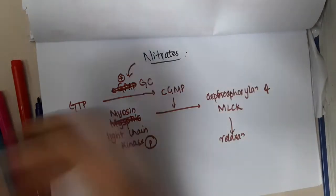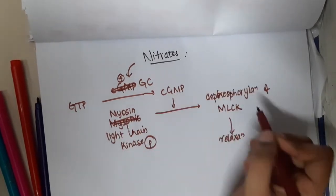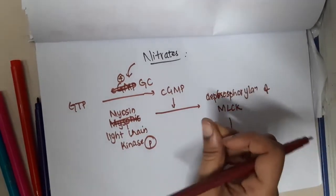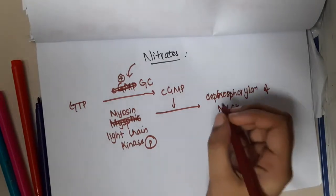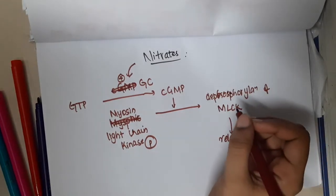This conversion of myosin light chain kinase to dephosphorylation of myosin light chain kinase occurs in the presence of phosphatase.